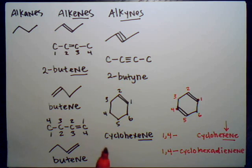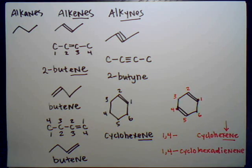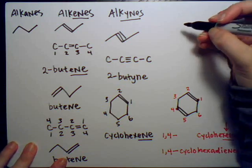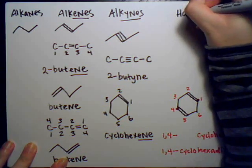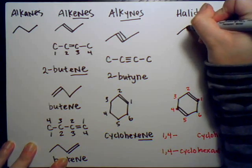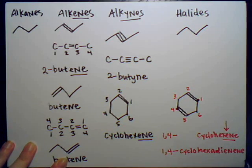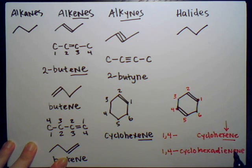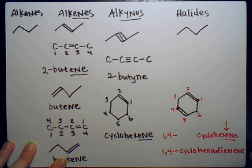Another type of substituent you might find on alkanes is halides. A halide comes from the halogen group of the periodic table — group seven — which includes fluorine, chlorine, bromine, and iodine. This is what we refer to when we talk about halogenation in organic chemistry.